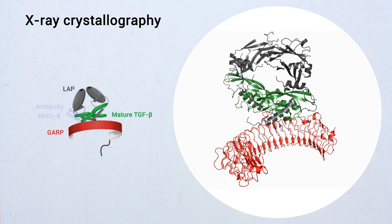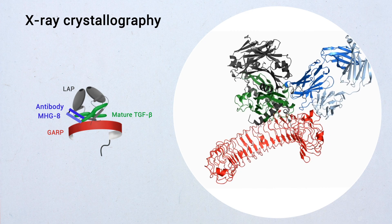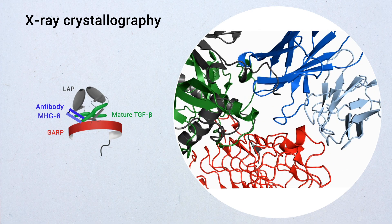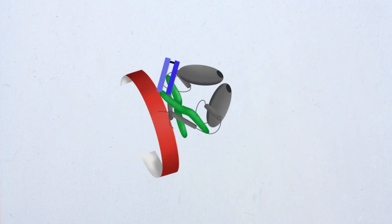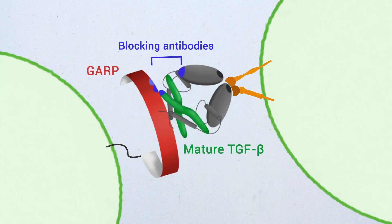Furthermore, our results elucidate the mechanism of antibody-mediated blockade of TGF-beta activation and immunosuppression by Tregs. Indeed, MHG-8 appears to glue GARP and TGF-beta together,